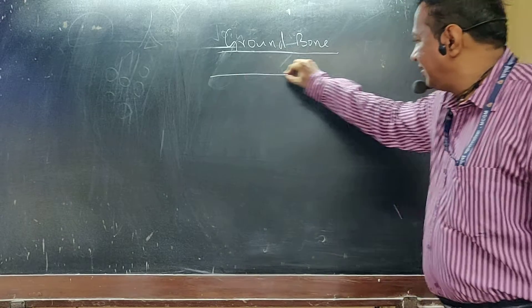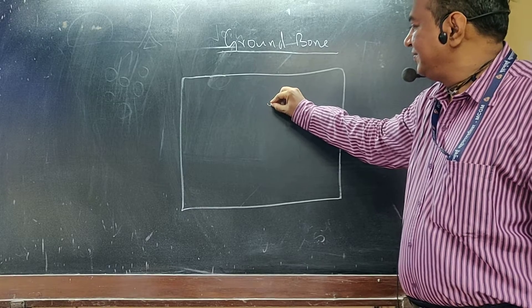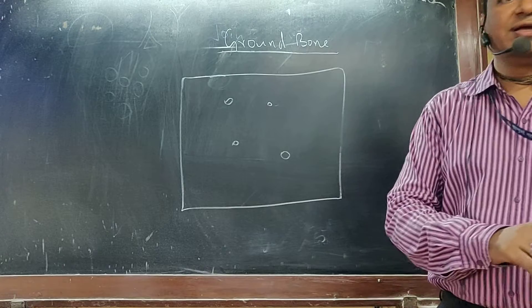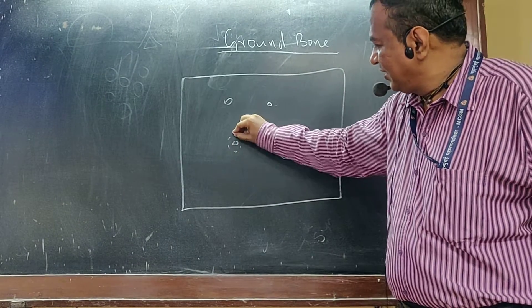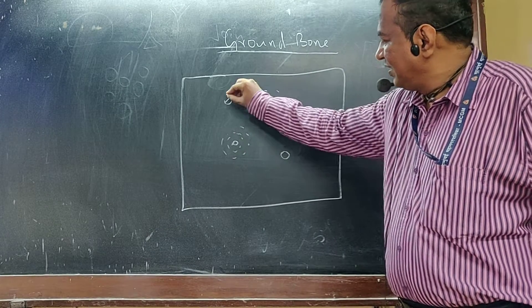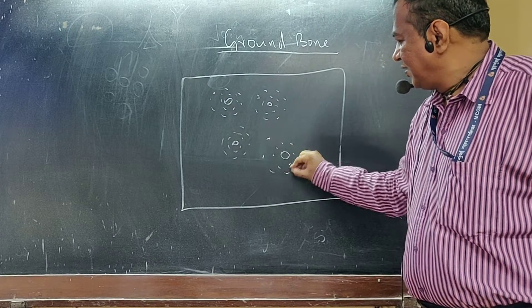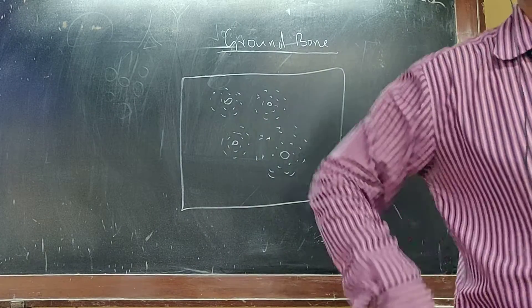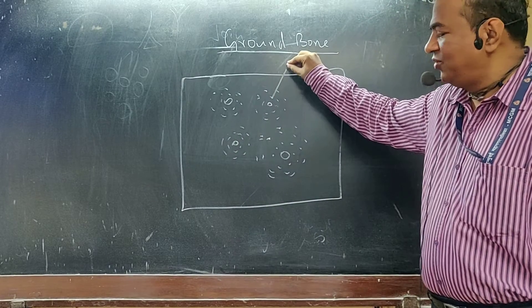What we see is a Haversian canal. Surrounding that are osteocytes arranged concentrically. What is this called? Concentric lamellae. This one unit is called an osteon.